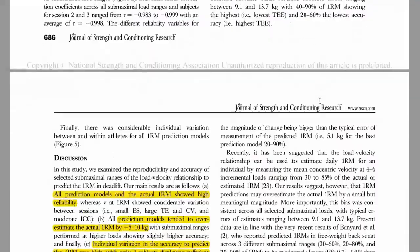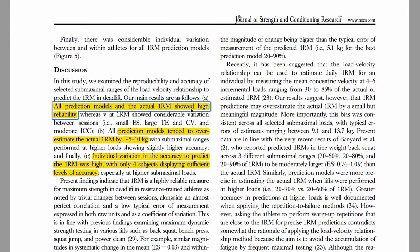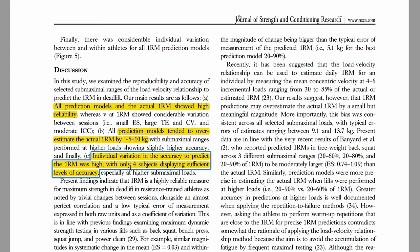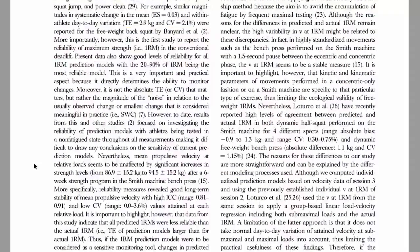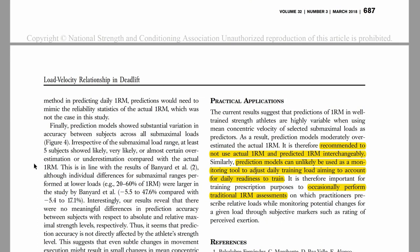To recap quickly: the prediction models were all highly reliable. On a group basis there was an overestimation of 5 to 10 kilograms, but on an individual level there was considerable variation and only 4 participants showed sufficient levels of accuracy. With this data we would not recommend using the actual 1RM and predicted 1RM interchangeably.